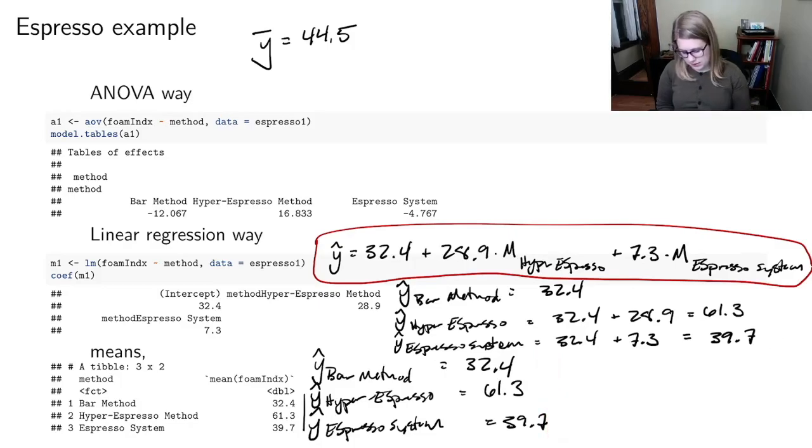And then the one that's new is the ANOVA method. And so the way the ANOVA method works is we say we've got Y hat is equal to the overall mean, which is 44.5. And then we do our effects for each of the groups. So we have three group effects. Nothing gets baked into the intercept like it does with linear regression. So I've got 44.5 plus, actually minus, minus 12.1, let's round, times bar method.